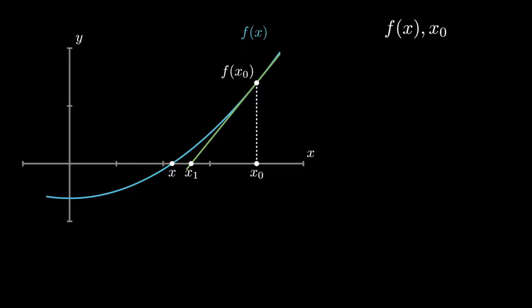x_1 is nearer to the root than our first guess x_0. So, let's find the value of x_1. We can see x_1 plus Δx is equal to x_0. Therefore, x_1 is x_0 minus Δx.